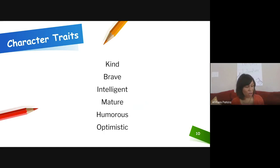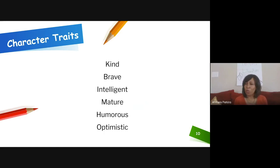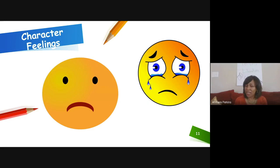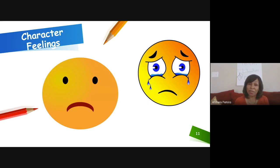Character traits tend to stay the same — this is the character's personality: kind, brave, intelligent, mature, humorous, optimistic. Character feelings include: sad, frustrated, happy, disappointed, silly. Those are examples of feelings that a character may have — there are more, but those are good examples.